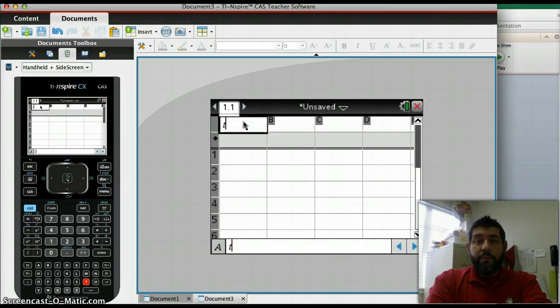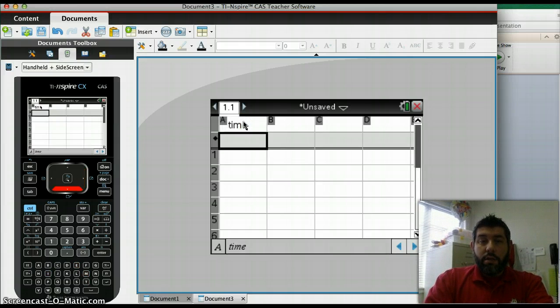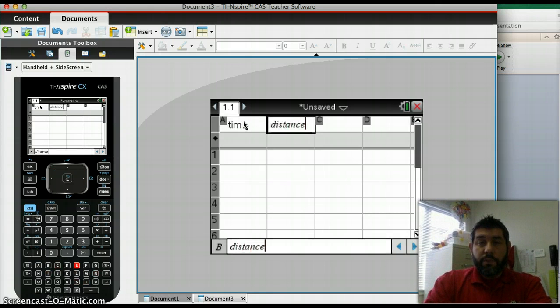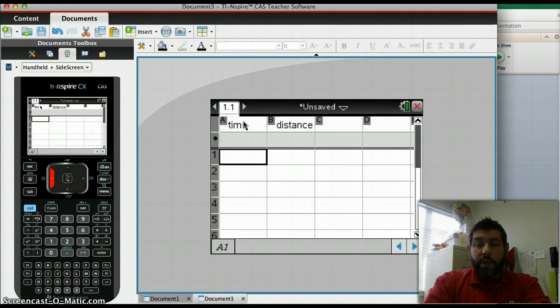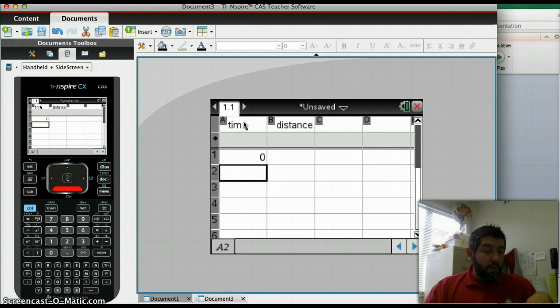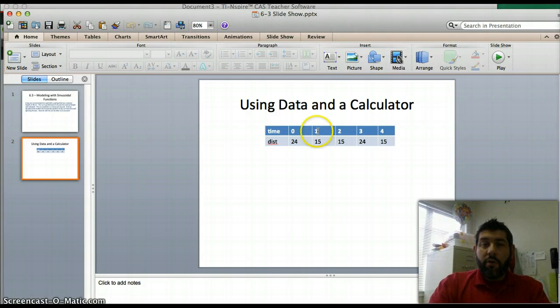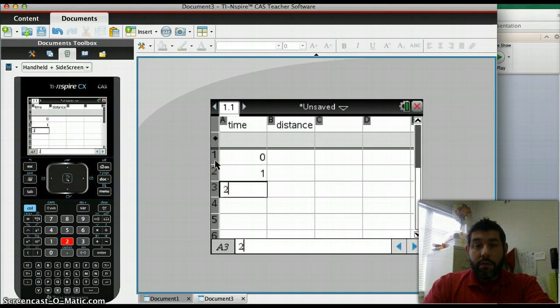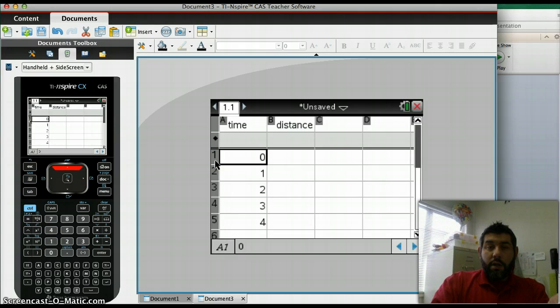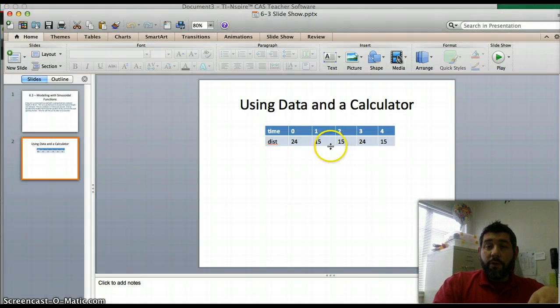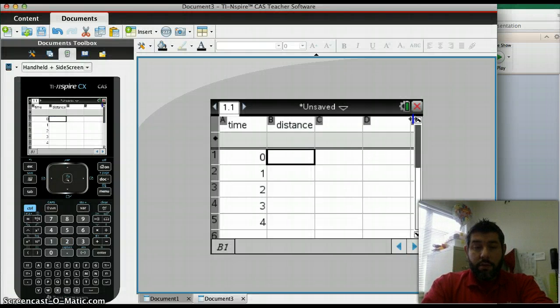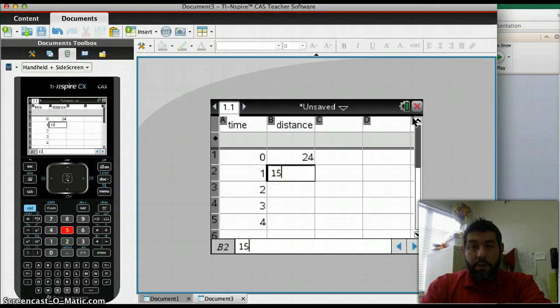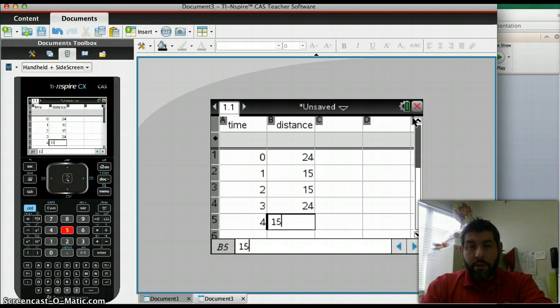We're going to do a list and spreadsheet. Let's call this time. And then call this distance. And we'll put in our information. So zero, we should go back and see what those were. Okay. So zero, one, two, three, four. So we're doing it every second. Zero, one, two, three, four. And then we have our distance. So 24, 15, 15, 24, 15.